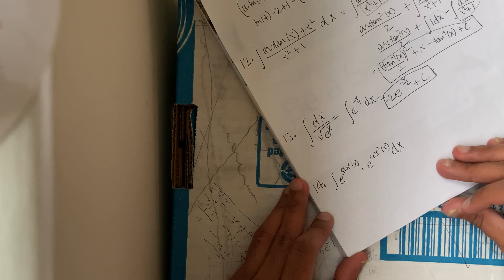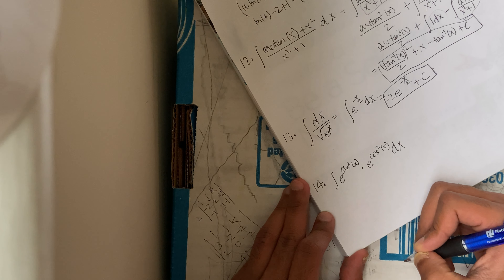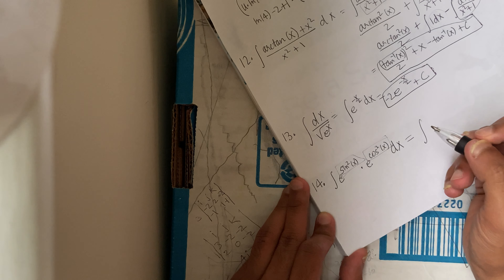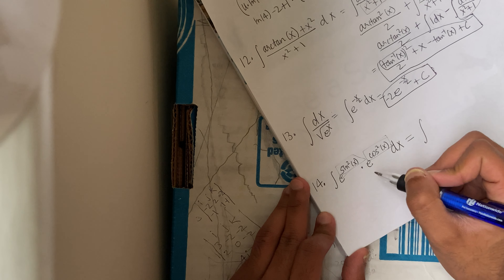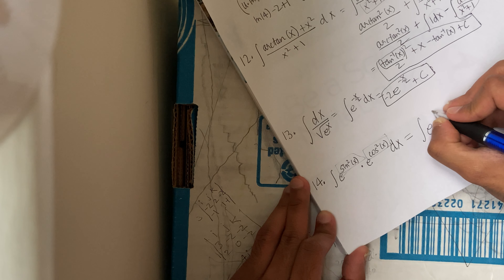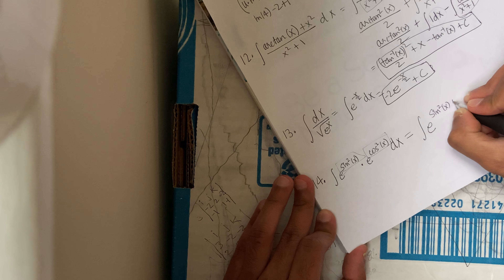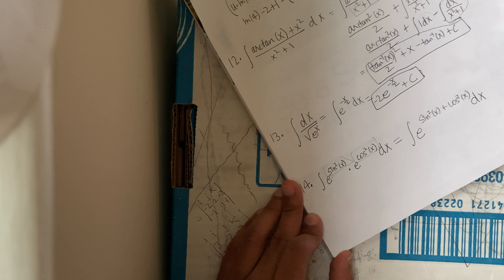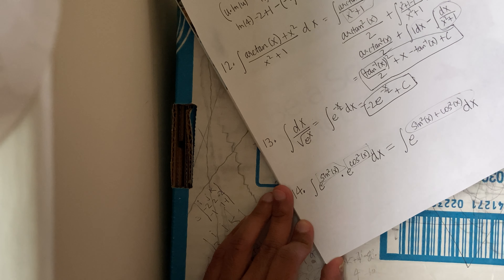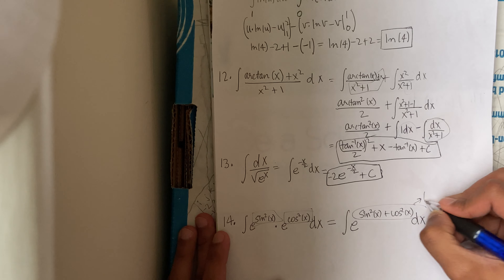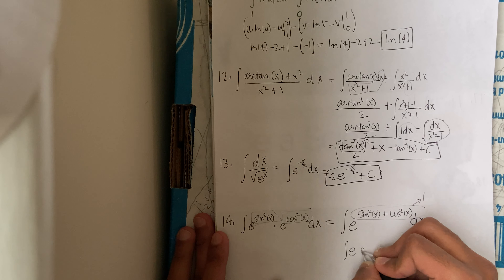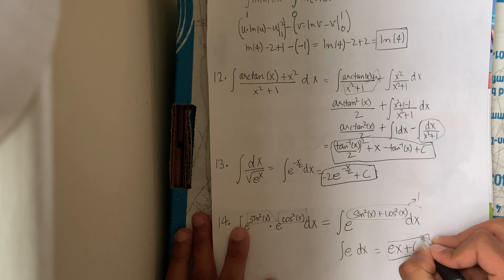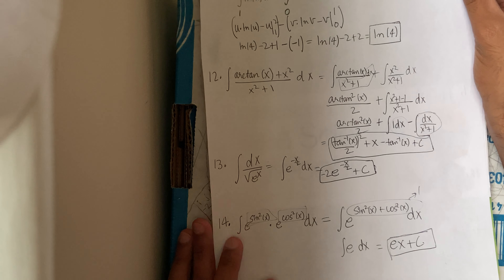Am I in for some trigonometric trouble? Of course not, because this is a bigger troll than anything. e raised to the sin²(x) times e raised to the cos²(x) — I don't like two e's multiplying, so I'll add the exponents into one: e raised to (sin²x + cos²x) dx. Since sin²x + cos²x = 1, the numerator is 1. So this is really the integral of e with respect to x, which is ex plus c. Nothing more.